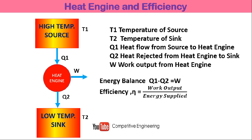The efficiency of the heat engine is defined as work output divided by energy supplied. Work output is W and energy supplied is Q1, so efficiency eta equals W divided by Q1. Since W equals Q1 minus Q2, we can write eta equals Q1 minus Q2 divided by Q1, which simplifies to 1 minus Q2 by Q1. This is the equation for efficiency of a heat engine — one minus heat rejected divided by heat supplied.